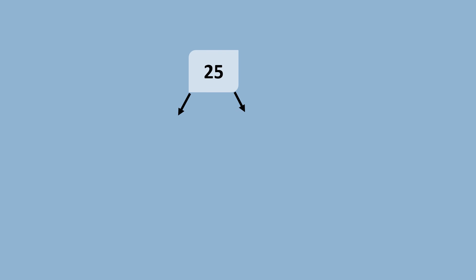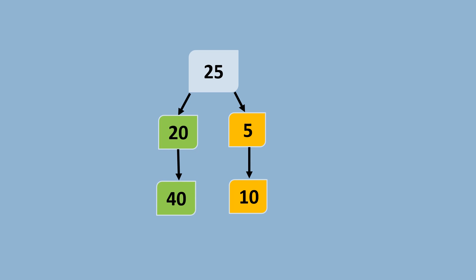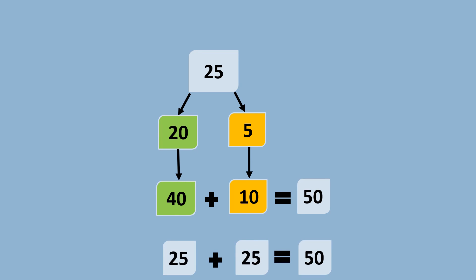Let's try doubling the number 25. It has 5 ones and 2 tens. When we double the number of tens we get 40. 40 plus 10 equals 50, which means the double of 25 is 50.